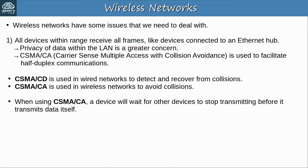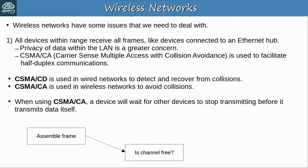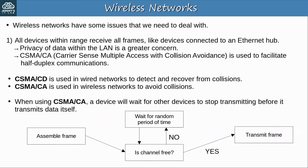Let's look at a simple flowchart of the process. The transmitting device assembles the frame and prepares it to be sent. Then it listens to check if the channel is free. If the channel is not free, it will wait for a random period of time, then listen again. If the channel is free, it will transmit the frame. Note that there is an optional feature in which the transmitting device sends a request-to-send RTS packet and waits for a clear-to-send CTS packet from the receiver before actually sending the data packet. Make sure you know the term CSMA/CA and that it is used in wireless LANs to avoid collisions.